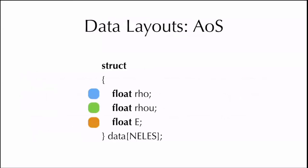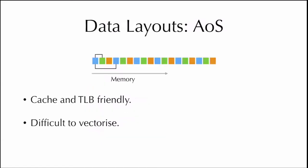The first layout, AOS, stands for Array of Structures and is what you will typically encounter if you write C code, as it's the most natural. The idea is you have a structure with your variables — in this case rho, rho-u, and e, the three quantities needed for the 1D Euler equations — and then you have an array of these structures whose length equals the number of elements you have. This results in density, momentum, energy, density, momentum, energy, and so on sequentially in memory. This data structure is very friendly from a cache standpoint, however it is not so good from a vectorization standpoint, as there's now a stride between adjacent densities, adjacent momenta, and adjacent energies, making the code difficult to vectorize and limiting memory bandwidth.